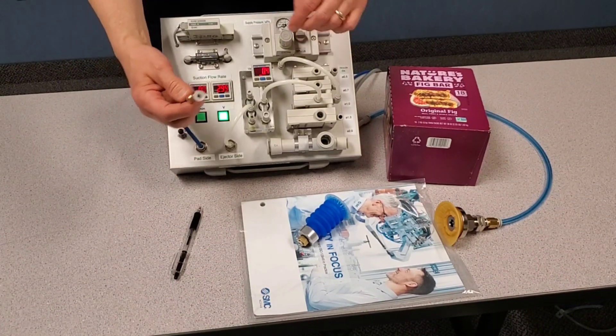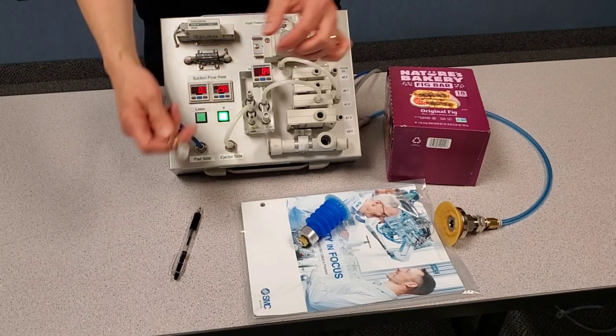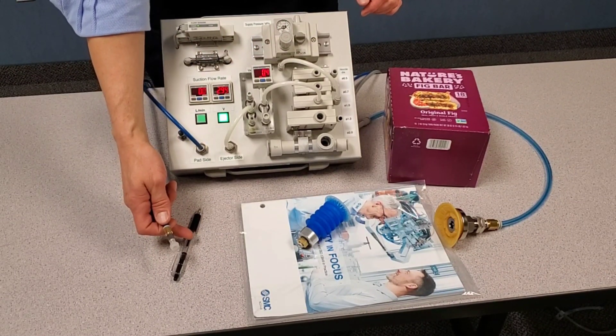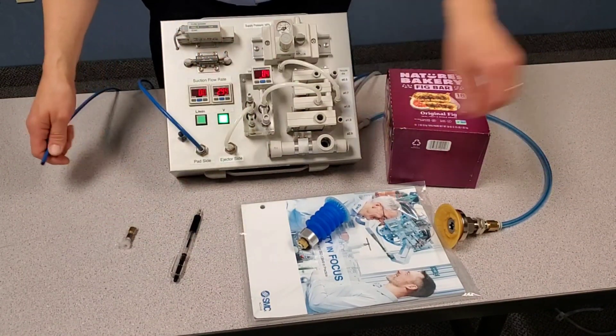That's just one example of using a bellows cup, approximately the same diameter as your material workpiece, non-porous, that you're picking up. Take that off.